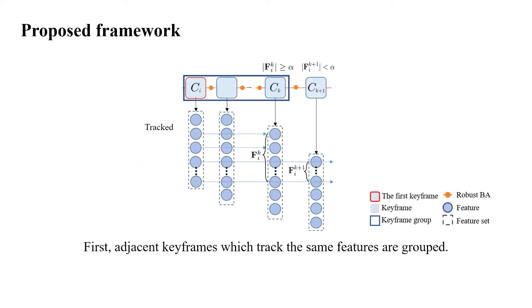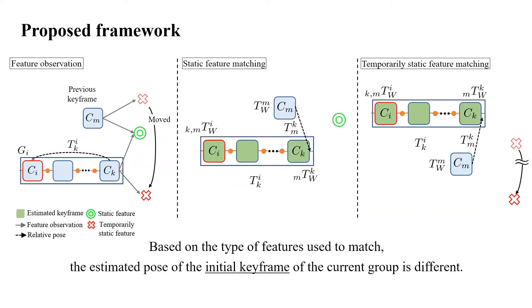To compare between loop closures, first, adjacent keyframes which track the same features are grouped. Here, we assume that the relative pose between a keyframe in the group and the initial keyframe of the group is accurate. Then, based on the type of features used to match, the estimated pose of the initial keyframe of the current group is different.